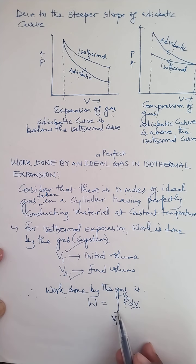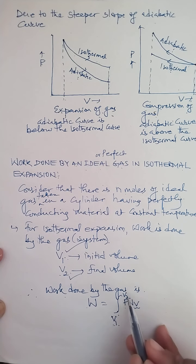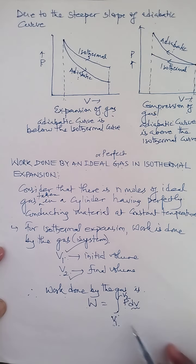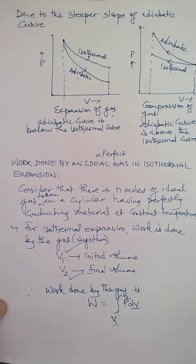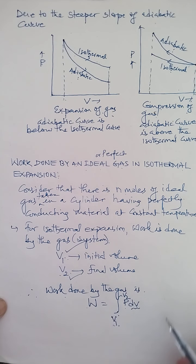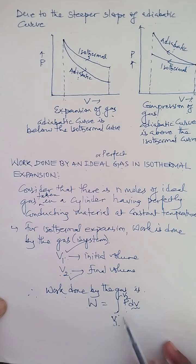The work done by the gas W equals integration from V1 to V2 of P dV. This dV is a very small change in volume, and to calculate the total change from V1 to V2, the total work done is W. This P is the pressure of the gas at any instant — because in isothermal expansion, only temperature does not change; pressure changes as volume changes.